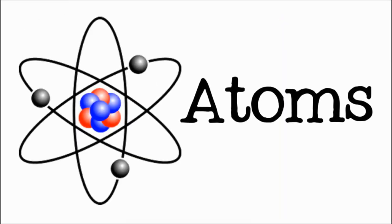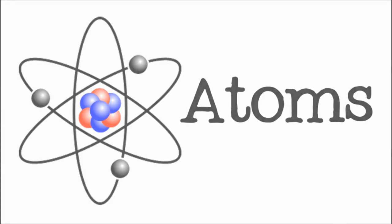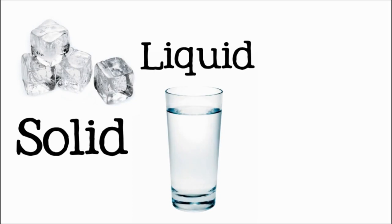Matter is made of tiny particles called atoms. Matter can be grouped into three main states: solid, liquid, or gas. To figure out which state of matter something is in, we need to examine its properties.